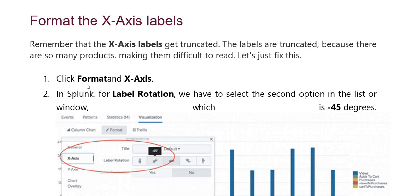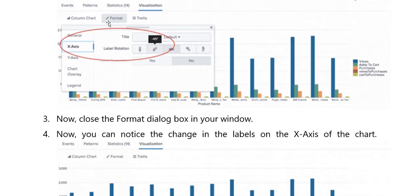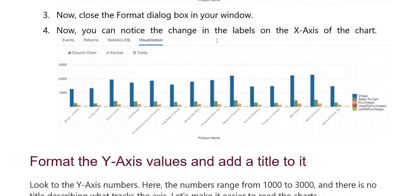Let's just fix this. First, you have to click on Format and then X-axis in Splunk. You have to select label rotation and choose the second option in the list on the window. Then you have to put the title and local label rotation to represent the rotation. Close the format dialog box when done.